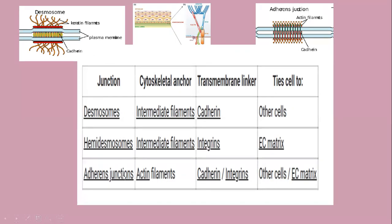Adherence junctions are very important. Unlike the previous two types which use intermediate filaments, adherence junctions use microfilaments like actin filaments. They can connect one cell to another cell, or one cell to the extracellular matrix, using actin filaments. The transmembrane linker is cadherin or integrin. In the diagram, the top right corner shows adherence junctions — the small globular structures are G-actin monomers connected using cadherin when between membranes, and also by actin filaments.